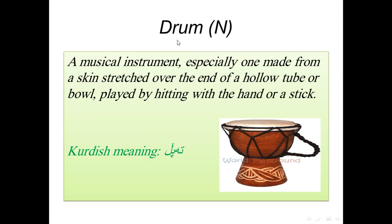Another vocabulary in this lesson is 'drum'. Its word form is noun. A drum is a musical instrument, especially one made from a skin stretched over the end of a hollow tube or ball. It is played by hitting it with a hand or a stick. The Kurdish meaning of drum is 'topple'. As you see from the picture, the top part is made from animal skin and we play the drum by hitting this area with our hand or a stick.